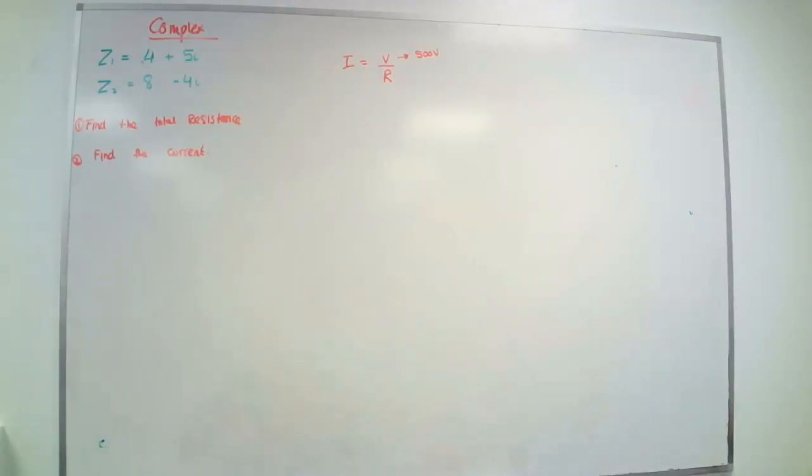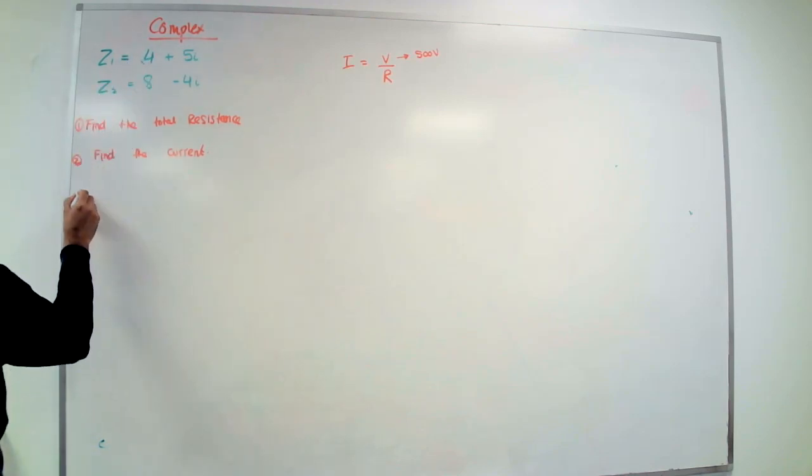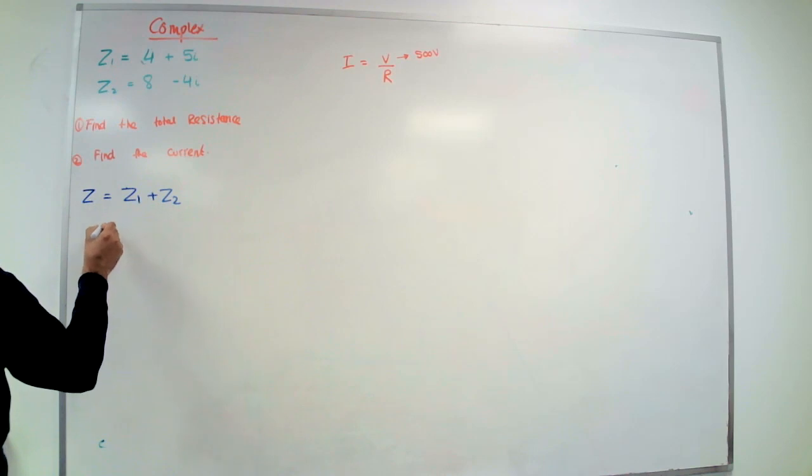Okay, here you go. Now Z1 is given, Z2 is given, we need to find the total resistance. To find the total resistance, what do we do? We actually add them, so Z equals Z1 plus Z2.